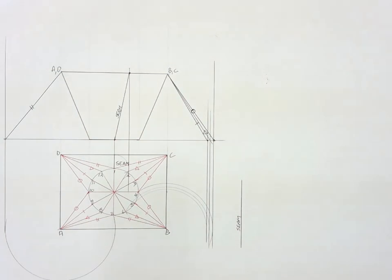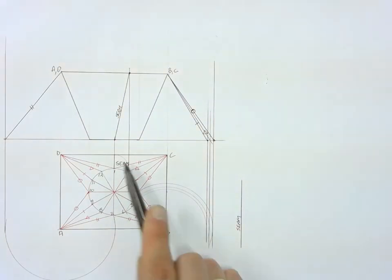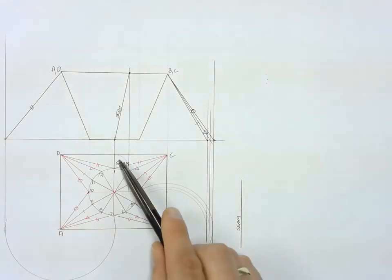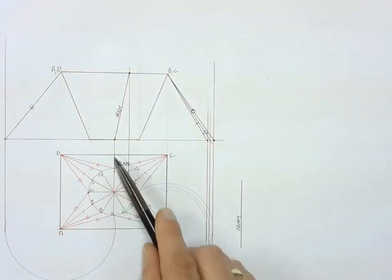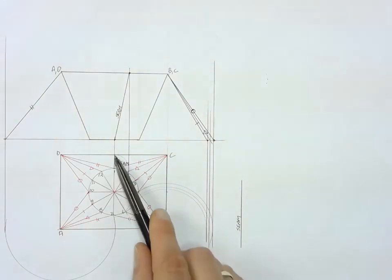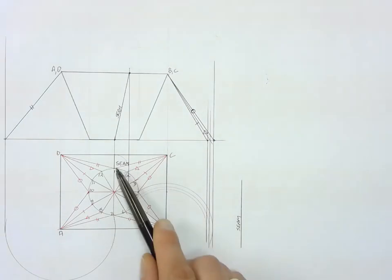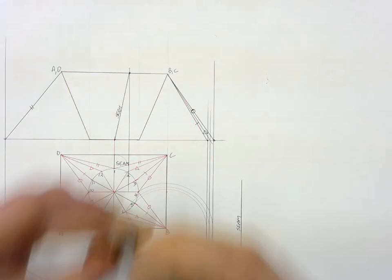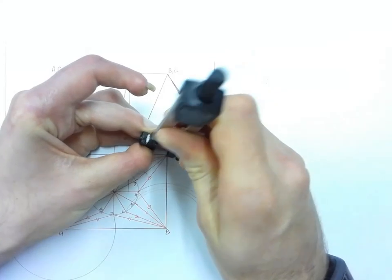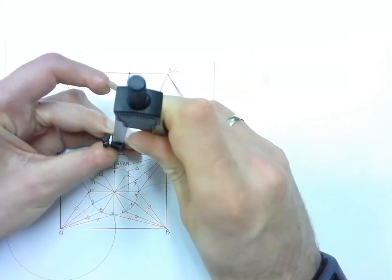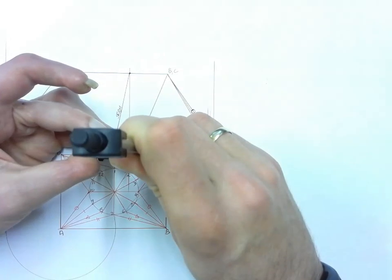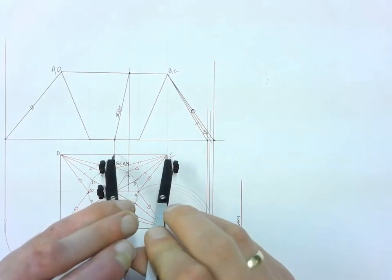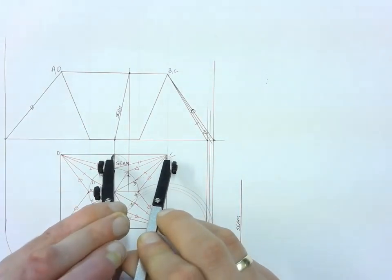I'm going to start constructing triangles from that seam in a clockwise direction, starting off with this triangle over here. I've got that line, so I need to go and construct this line here, and then C1. This line over here is already a true length in the top view, so I can go and take my compass and put my compass on that length.